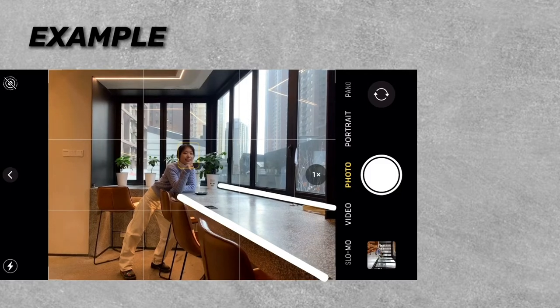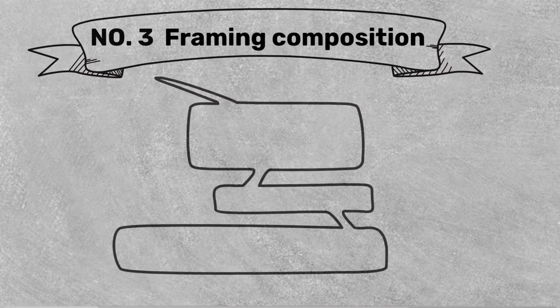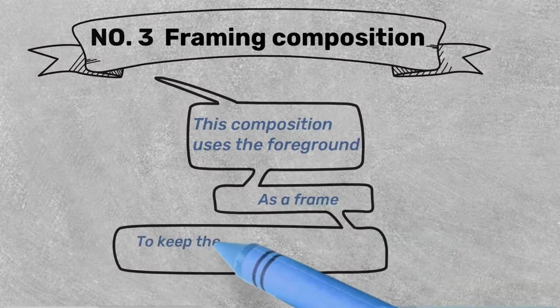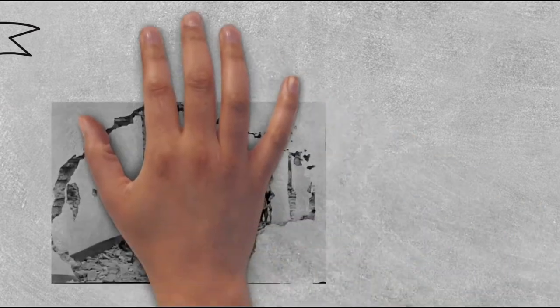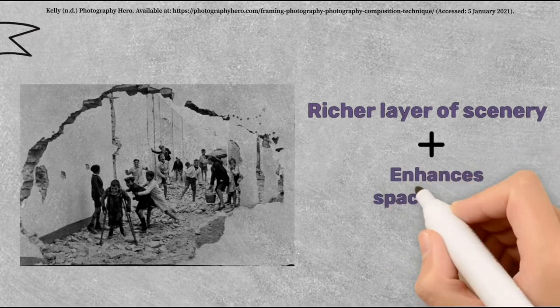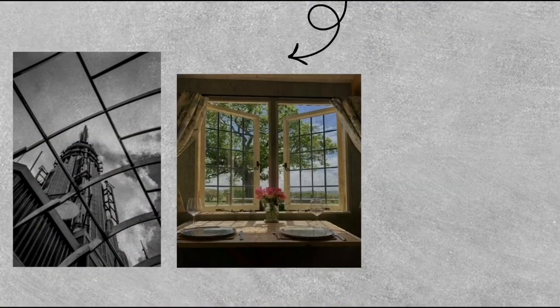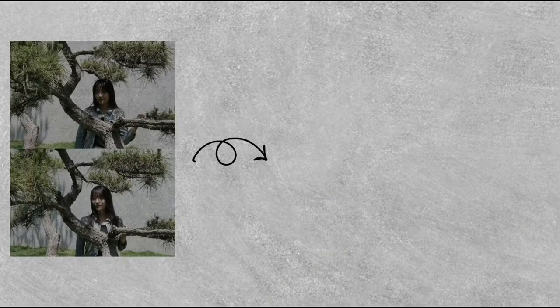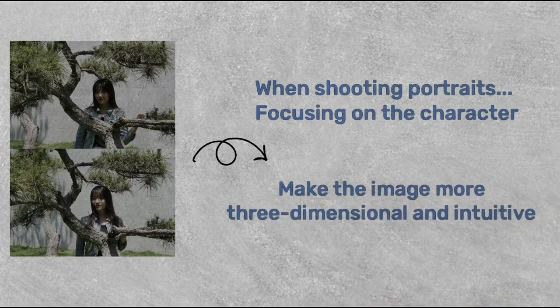The diagonal composition gives the subjects a sense of dimension and texture. Method 3 is framing composition. This composition uses the foreground as a frame to keep the viewer's attention focused on the subject. It can also filter out the cluttered background, providing a richer layered scene and enhancing the spaciousness and storytelling of the photograph. When shooting portraits in this way, we can use doors, windows, or a lattice as frames. Focusing on the character and defocusing the background makes the image more three-dimensional and intuitive.